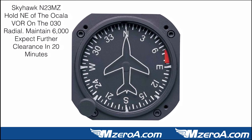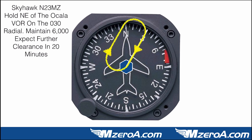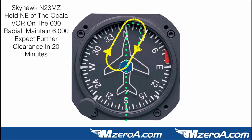What if I was given this radio call? Skyhawk 23 Mike Zulu, hold northeast of the Ocala VOR on the 030 radial, maintain 6,000, expect further clearance in two zero minutes. Follow the same procedure — put that fix right in the middle, draw a line from 030 to that fix for our inbound course, then draw that right racetrack pattern. If I was really on a north heading, I would fly right through my VOR and teardrop back around to enter this hold. A teardrop entry is what I'd make. And if you said parallel, don't feel bad — this one's actually on the verge. But a teardrop entry is much easier, one less turn, so I would choose teardrop in this case.